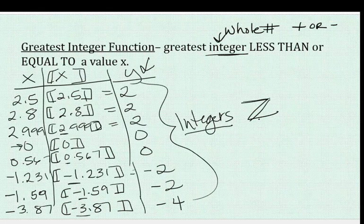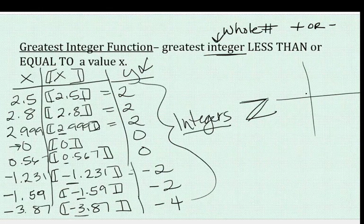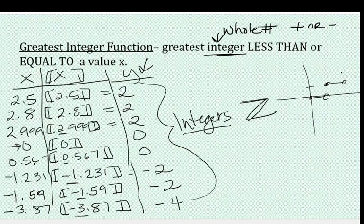So what happens to our graph? What begins to happen as you graph is you get a step function, and it begins to look like this. I'll show you why.